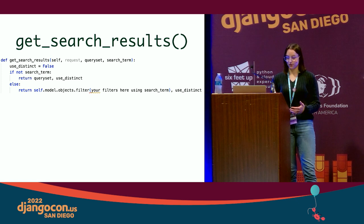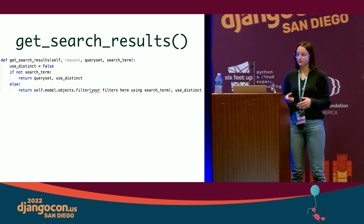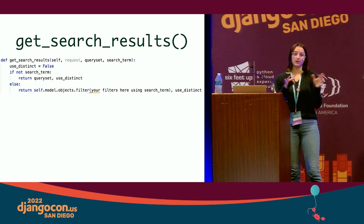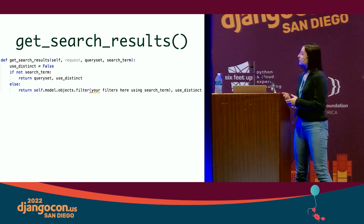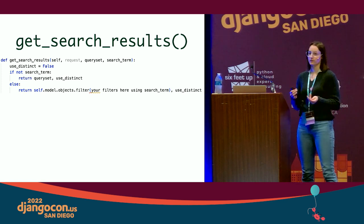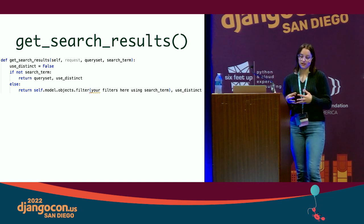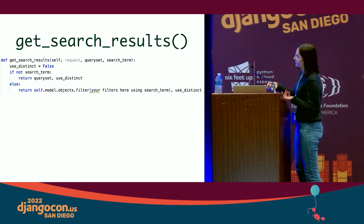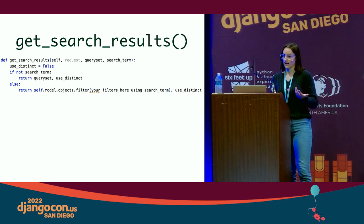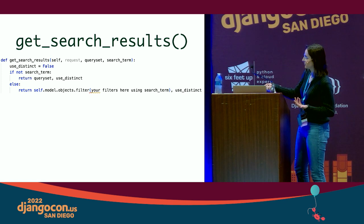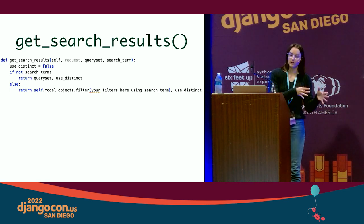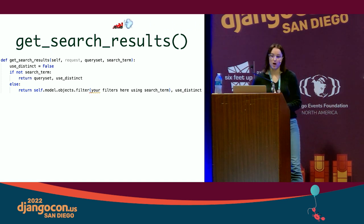With just six lines of code we can drastically speed up search results. The `get_search_results` function is how Django returns results based on your search query. The reason this is faster is because you're specifically telling Django what objects you want, rather than Django assuming you want every single related thing. You set `use_distinct` to False — using DISTINCT in SQL is a lot slower. If there is no search term, just return the queryset; otherwise return the exact filtered objects you want.